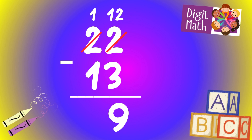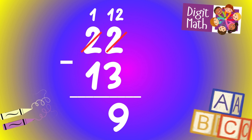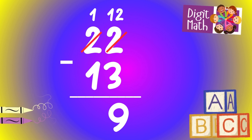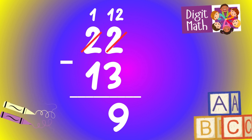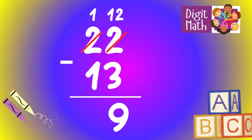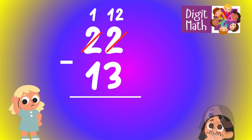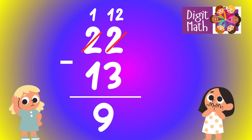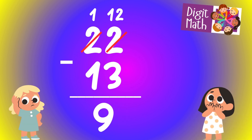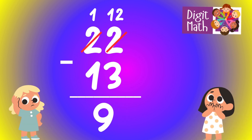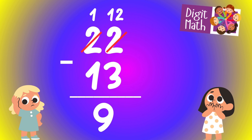In the tens column, we now have 1. Subtract 1 from 1, which equals 0. So the final result is 22 minus 13 equals 9.